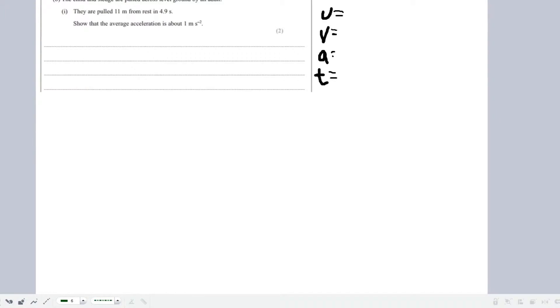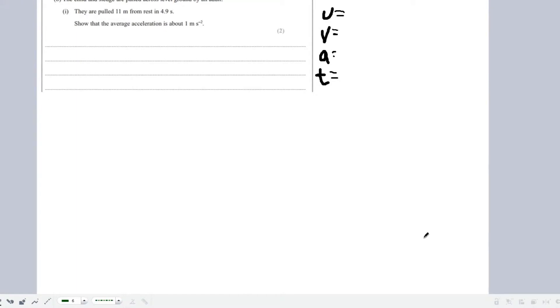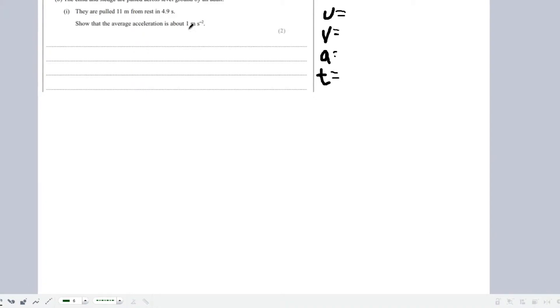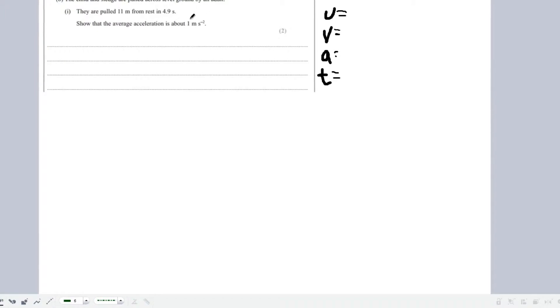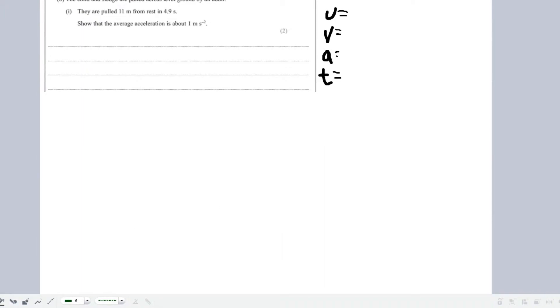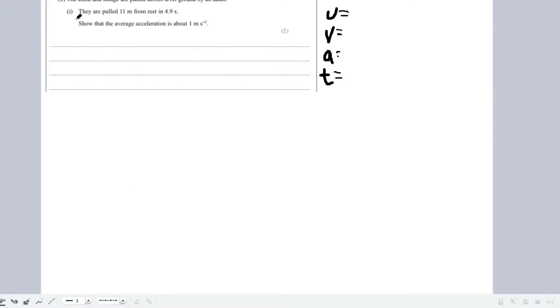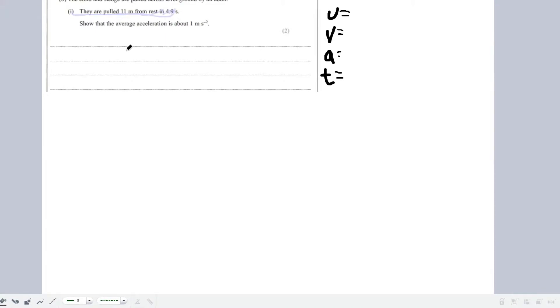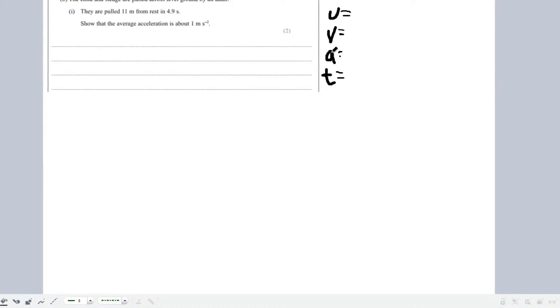The next part of this question talks about how a child and the sled are pulled across level ground by an adult. They're pulled 11 metres from rest in 4.9 seconds, to show that the average acceleration is about 1 metres per second to the minus 2. All the variables seem to be in this little part here. In the exam, you might have a highlighter to highlight all the key parts of information.